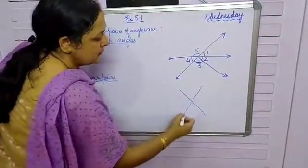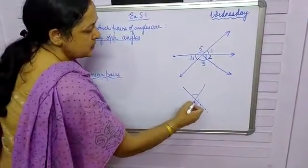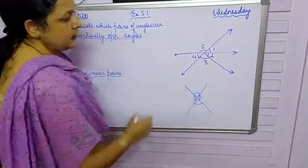Now vertically opposite angles are formed whenever two lines intersect. And when two lines intersect, we get two pairs of vertically opposite angles.